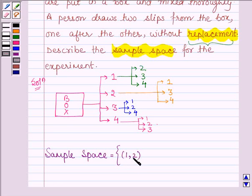first slip will have number 1 and the other will have number 2, or (1, 3), or (1, 4). Now,